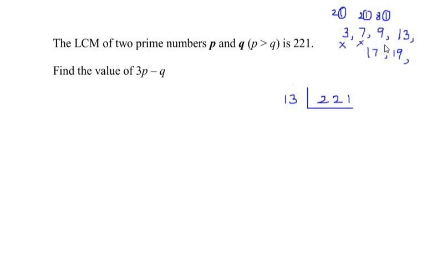Not even 7, not even 9. Let us try the table of 13. 13 times 1 is 13, 22 minus 13 is 9, so 13 times 17 gives us 221. That means 221 is 13 times 17, and 13 is a prime number.